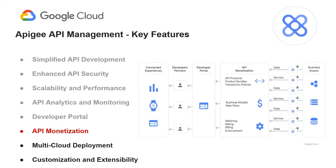Talking about API monetization, Apigee enables organizations to monetize their APIs by offering features such as rate limiting, usage tracking, and billing integration. Apigee lets organizations create different tiers of API access with varying pricing plans, generating revenue from their APIs and exploring new business models. In this reference architecture, the API monetization feature is able to bundle transaction policies and business models, create rate plans, and enable monitoring for rating and billing enforcement.